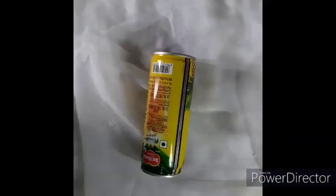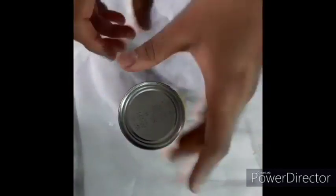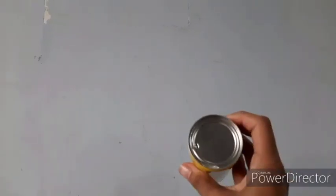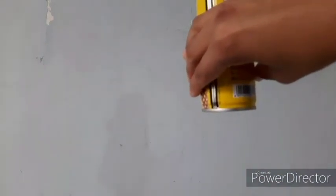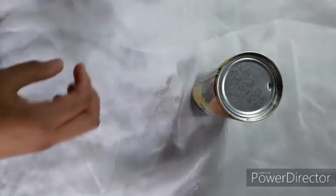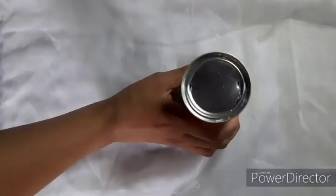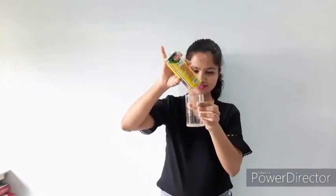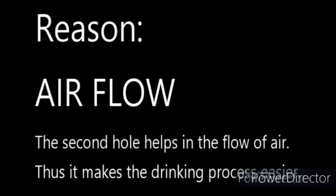Many of us love drinking coffee, right? Have you noticed the two holes in the lid of the coffee mug? Do you think there's a reason behind it? I have a can of fruit juice here, sealed. Let's make one hole — will this hole help us to drink? No, it's not dripping out. Now let's make another hole diametrically opposite to that, similar to a coffee lid. After having two holes in the can, it flows very well. The reason is air flow — the second hole helps in the flow of air, making the drinking process easier.